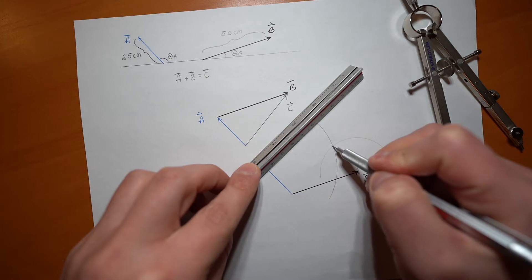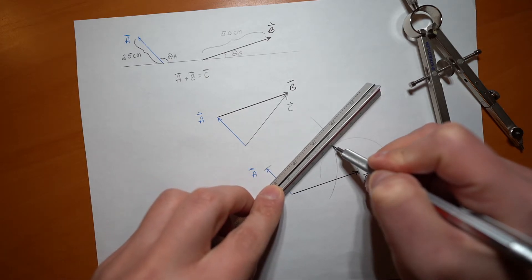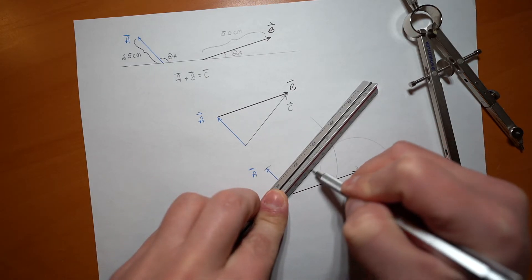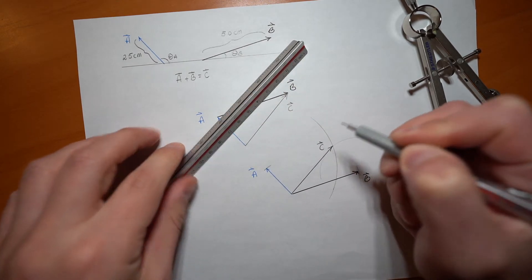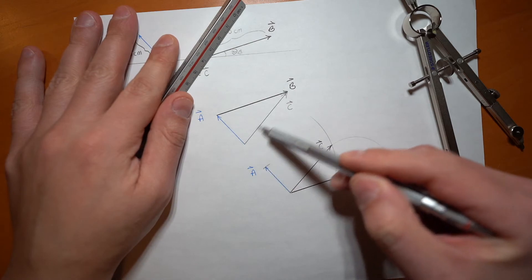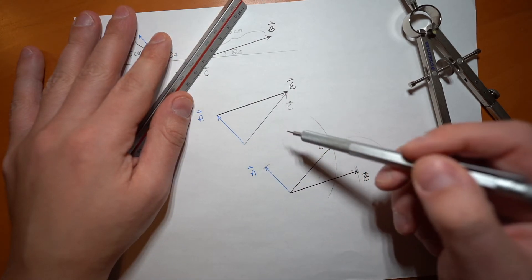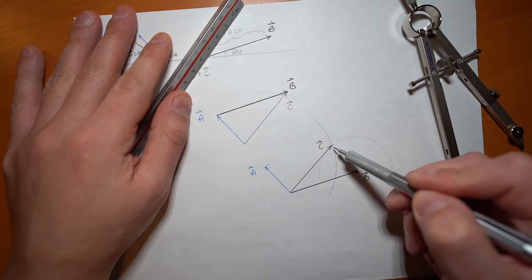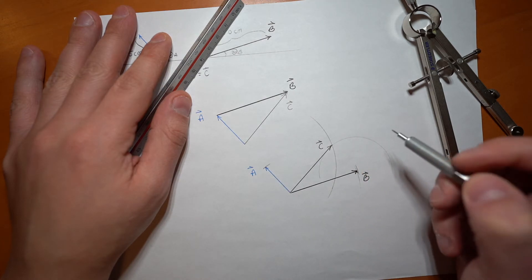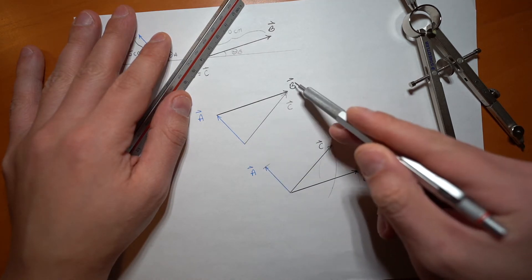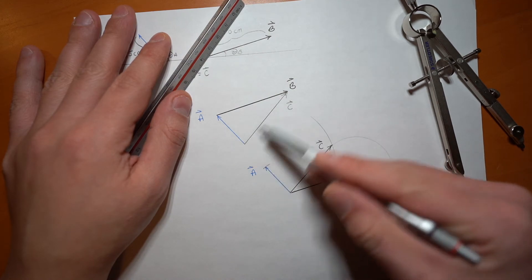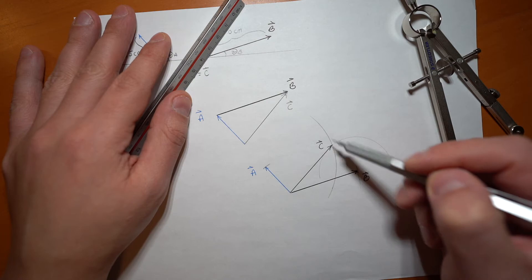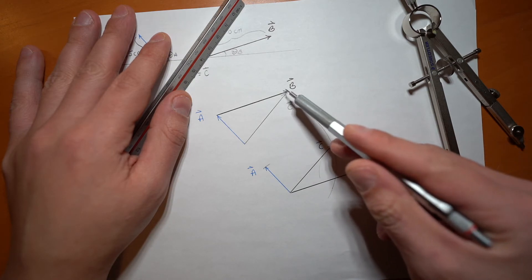This point of intersection right here is the resultant vector C. If you notice, this C that we did previously using the tip-to-tail method and this C that we've just created using what's called the parallelogram method are exactly the same. If you account for a little human error, I made a mistake there in the corner. But for all intents and purposes of the demonstration, we have equivalent vectors C.